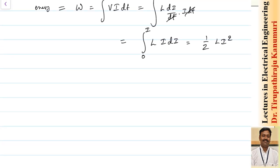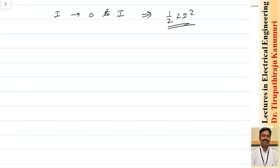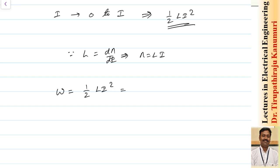The energy stored in an inductor when the current is changed from zero to I is W = ½·L·I². The magnetic field is stored as energy, just as in a capacitor the energy is stored as an electrostatic field. Since Ψ = L·i, this can also be written as W = ½·Ψ·I, or equivalently W = Ψ²/2L.